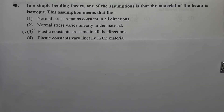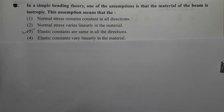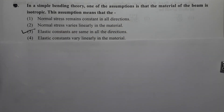Next question: In simple bending theory, one of the assumptions is that the material of the beam is isotropic. This assumption means that an isotropic material is one in which the elastic constants are the same in all directions. That is why option 3 is the correct option.